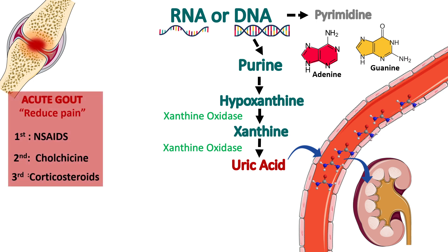To treat acute gout, we use three lines of drugs. The first line is NSAIDs, that is non-steroidal anti-inflammatory drugs. If they fail to elicit a response, or in cases where we cannot use NSAIDs — for example, urate nephropathy or NSAID allergy — we go for the second line, that is colchicine. If colchicine fails also, then we go for the third line, that is corticosteroids.